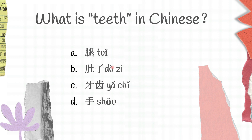Another question here: what is teeth in Chinese? We have A, tui; B, duzi; C, yáchǐ; D, shǒu. Tui is leg, duzi is belly, yáchǐ is teeth, shǒu is hand. So teeth in Chinese is C, yáchǐ.